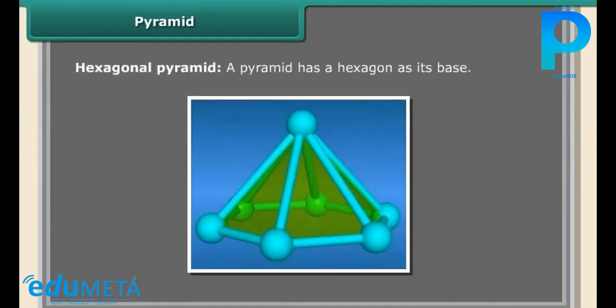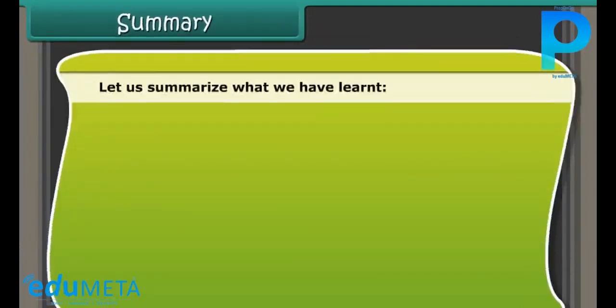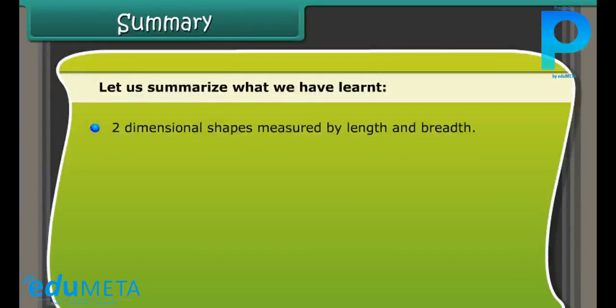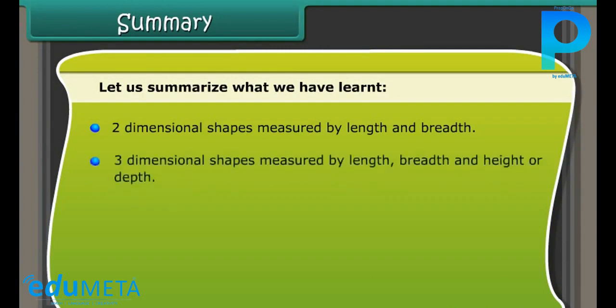Summary. Let us summarize what we have learned. Two-dimensional shapes are measured by length and breadth. Three-dimensional shapes are measured by length, breadth, and height or depth. 3D objects have different views from different positions.